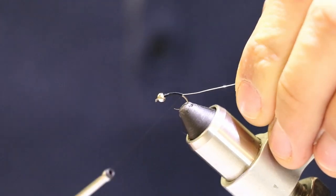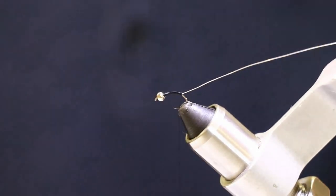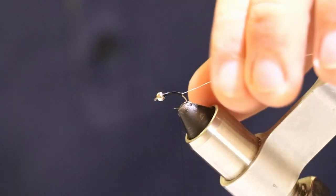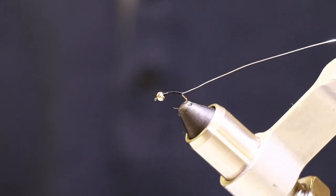But I'm going to wrap my thread all the way until the bend of the hook there. So that's basically your body. This is your body. And this is basically what the body of the fly is going to look like.